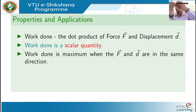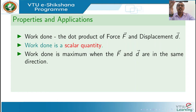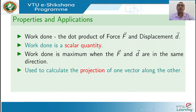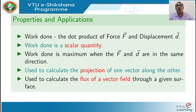Work done is zero if force and displacement are perpendicular — a force acting vertically cannot produce horizontal displacement. In the case of friction, the friction force acts opposite to the direction of motion, so the angle between force and displacement is 180 degrees. Since cos(180°) = −1, the work done by friction is negative. The dot product can also be used to calculate the projection of one vector onto another, and the flux of a field through a given surface.